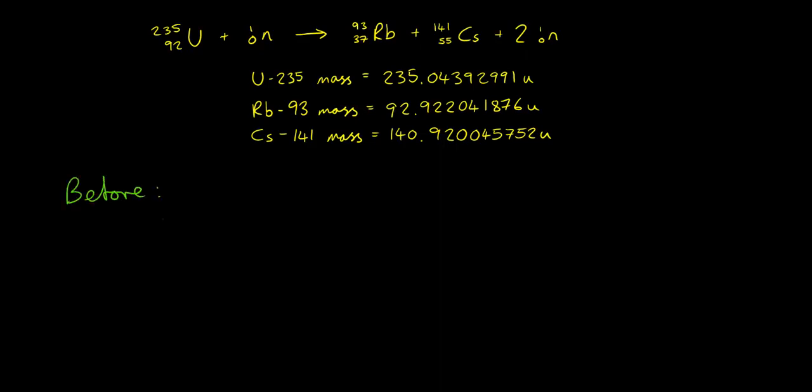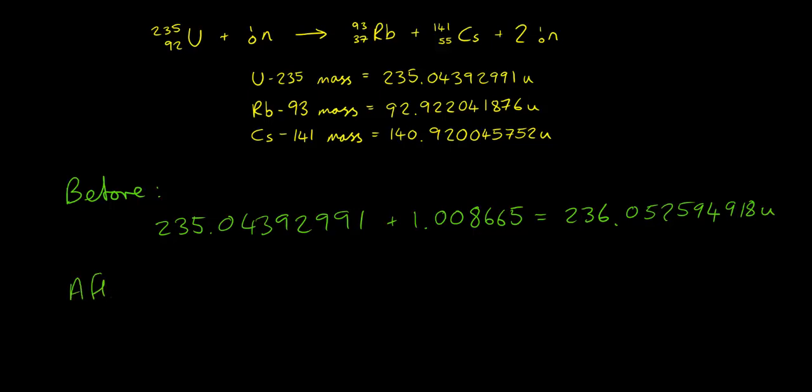So, we need to add the mass of the uranium, 235.04392991. Again, we're going to have to use all these significant figures, plus the mass of a neutron, which you would look up on your data booklet is 1.008665, which will give us a combined mass of 236.052594918U.